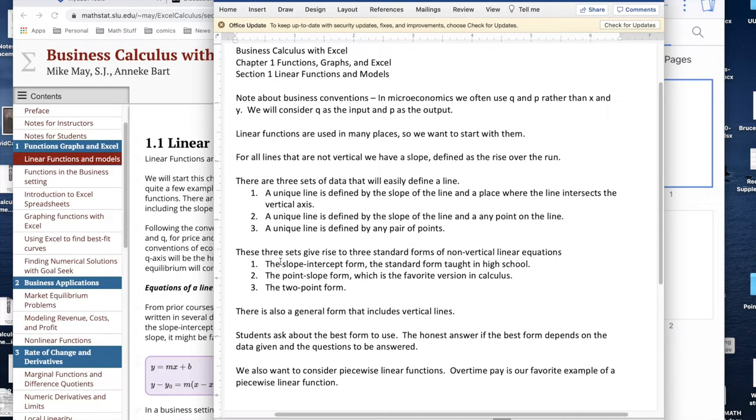From the three sets of data we have the slope intercept form, the point slope form, and the two point form. There's also a general form that's used for vertical lines.